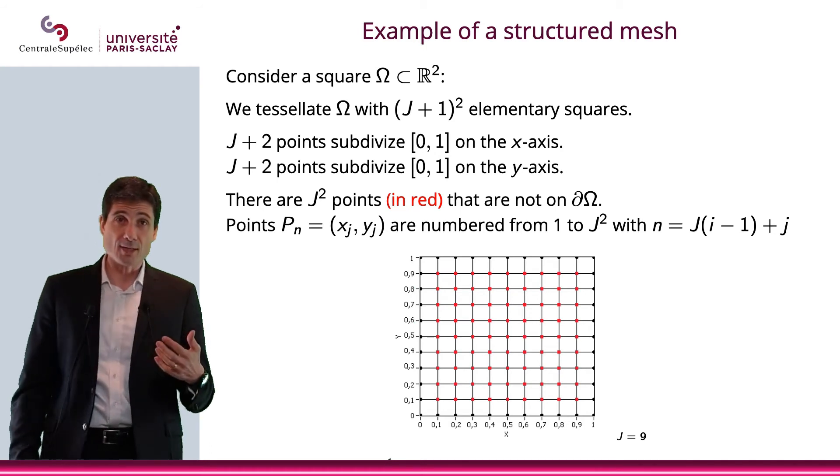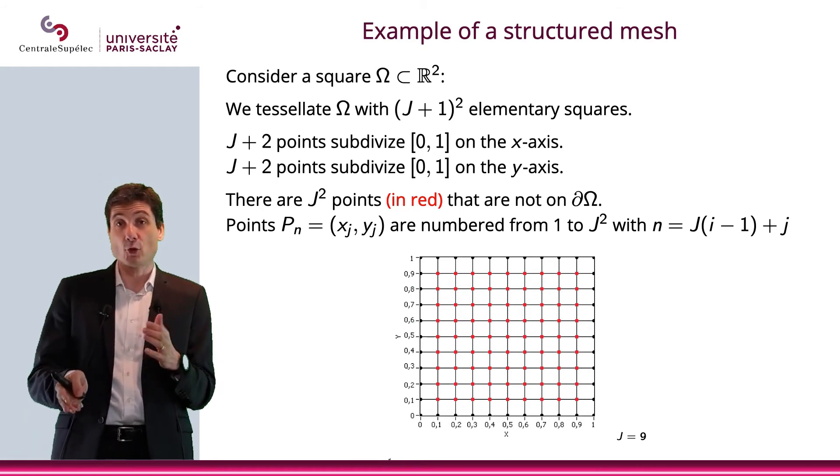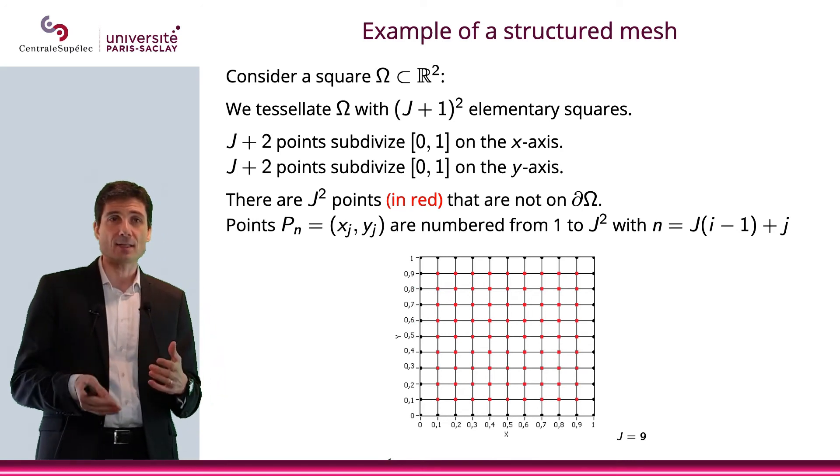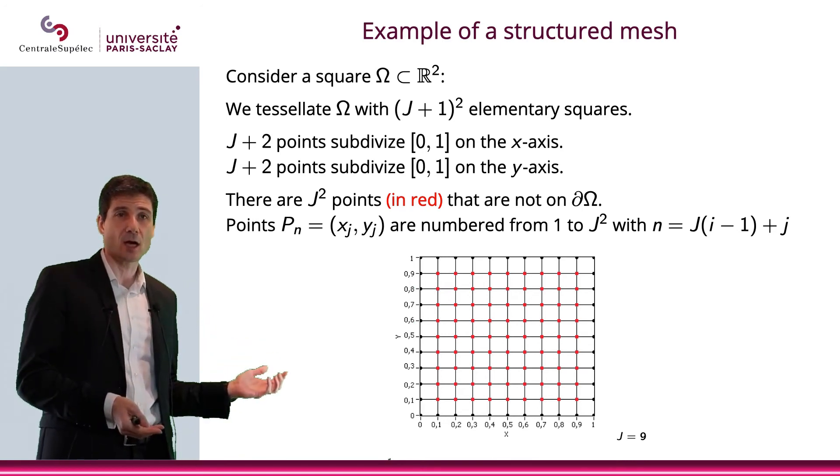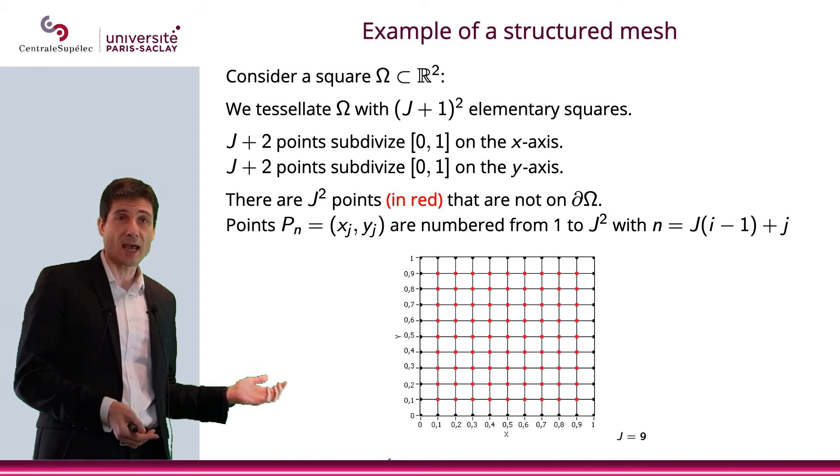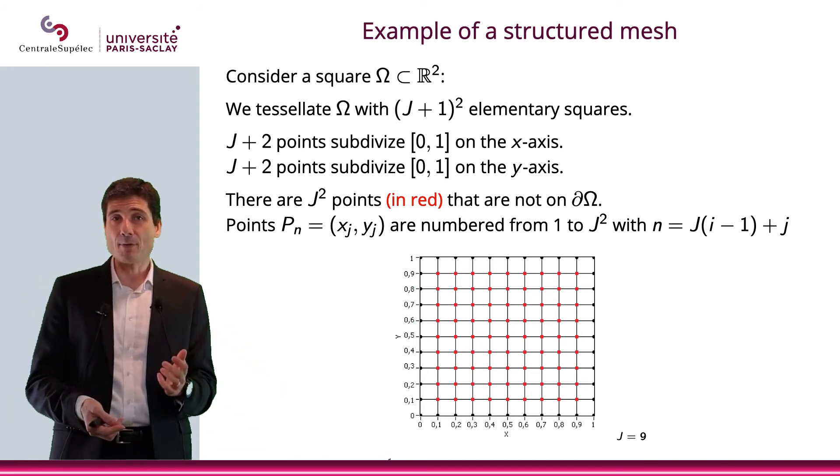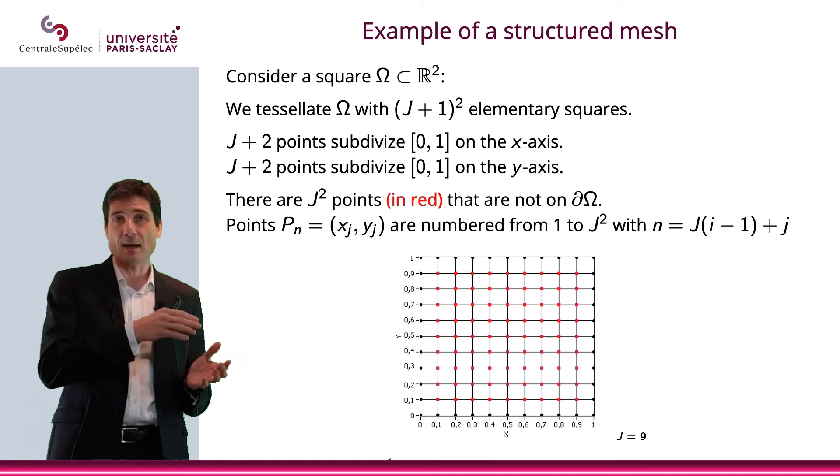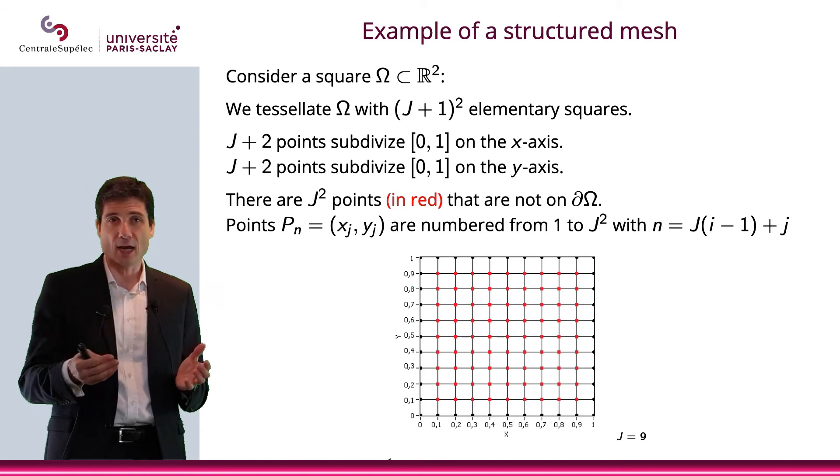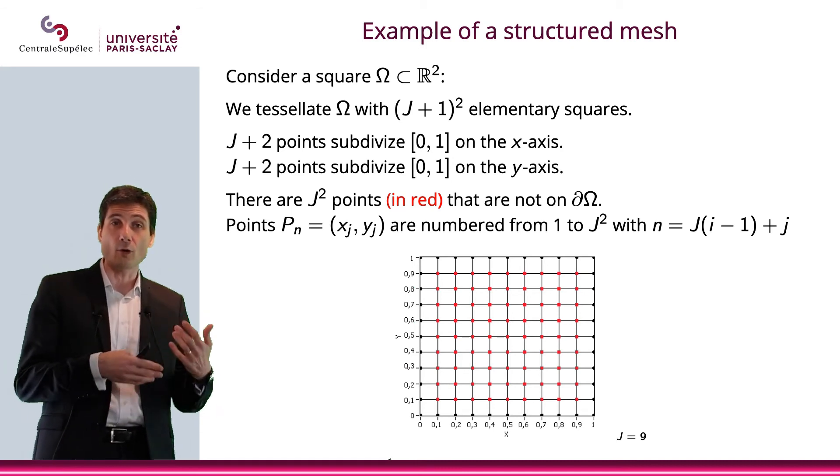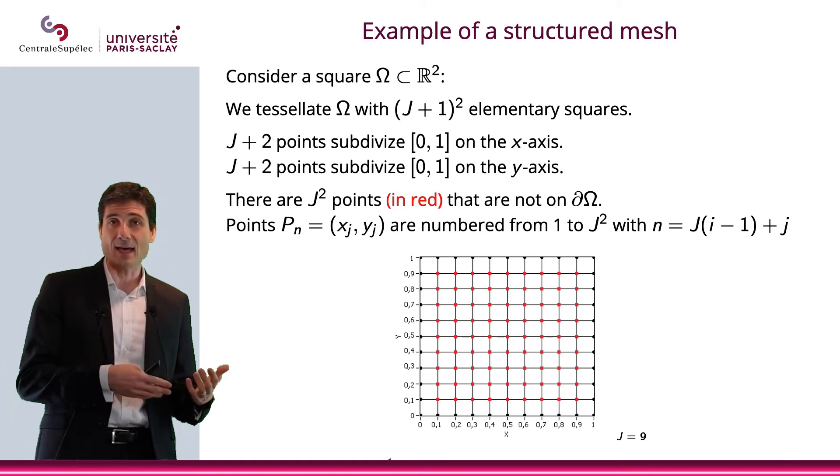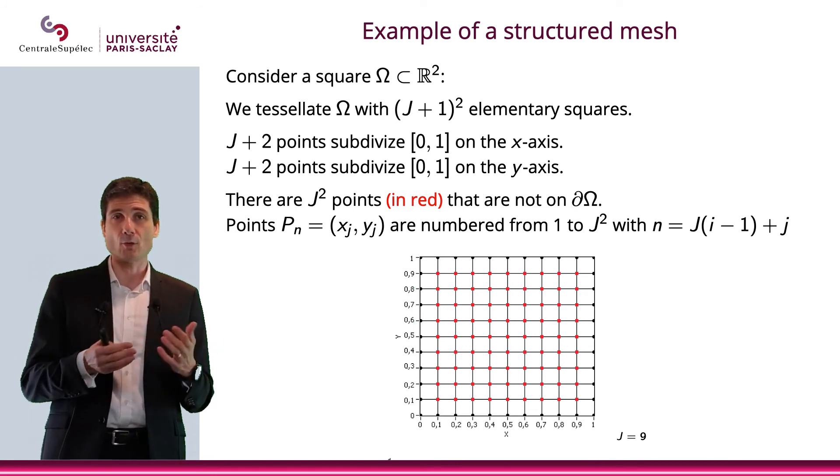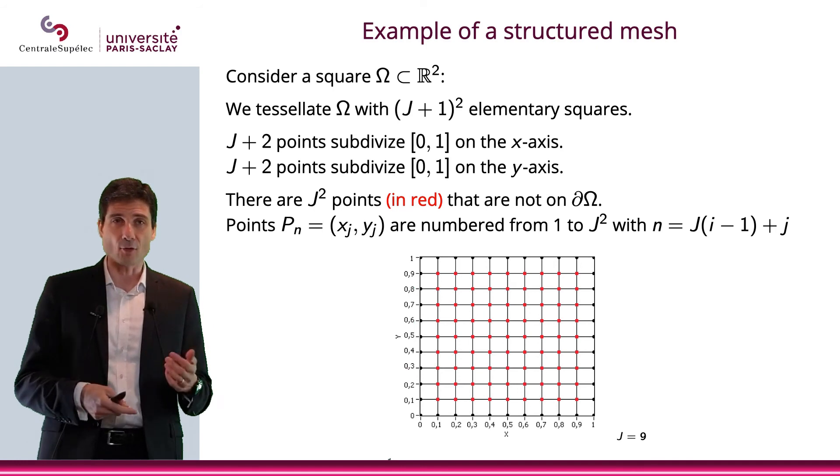Now, the points that you have that have two coordinates, i and j, you can number them by saying, for instance, P_n will be (x_i, y_j). And what happens is that n will be capital J times (i-1) plus j. So that is a way to number all of the points with only one index, n. And that's a way to go from basically two indices to one index and vice versa.